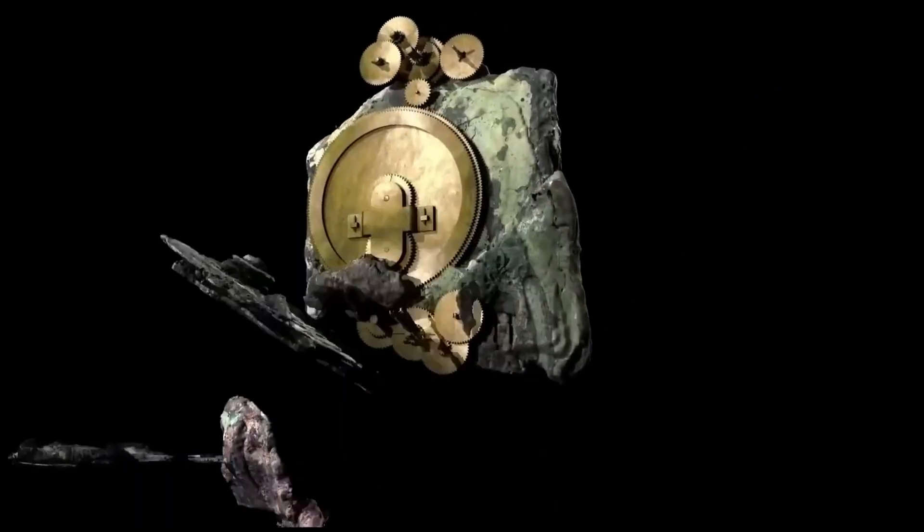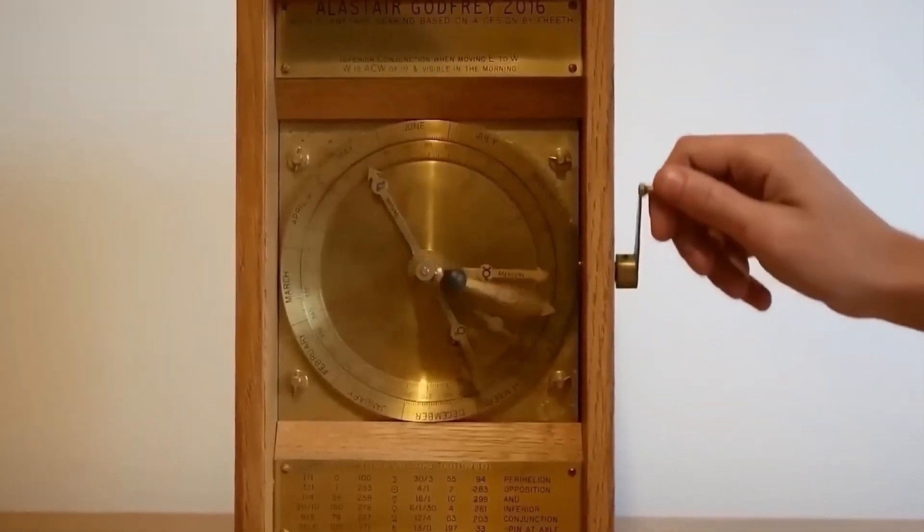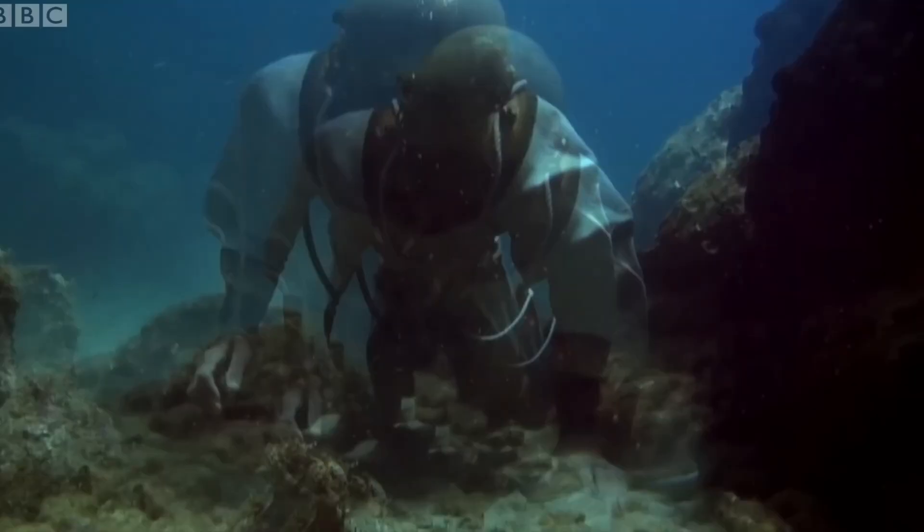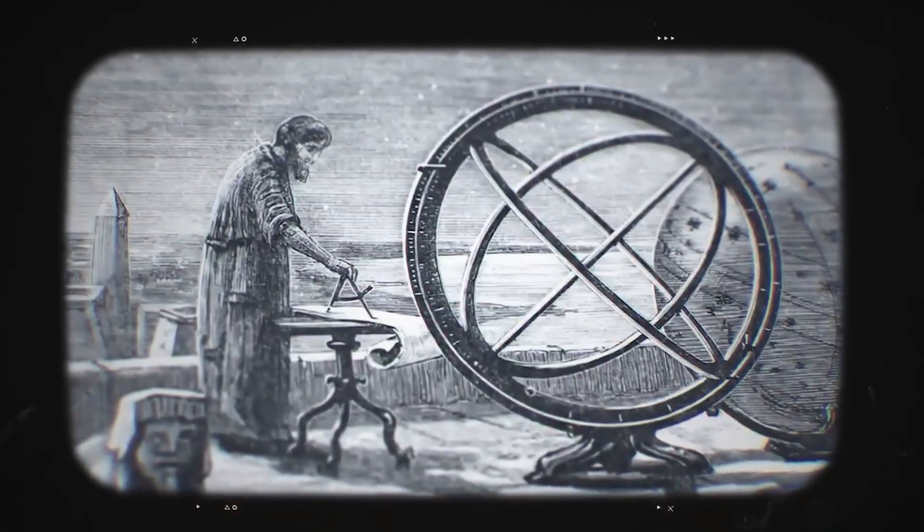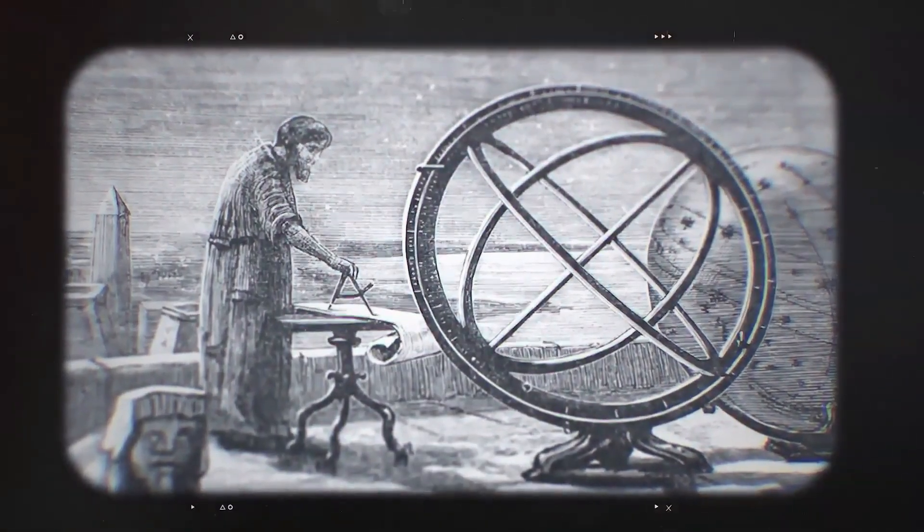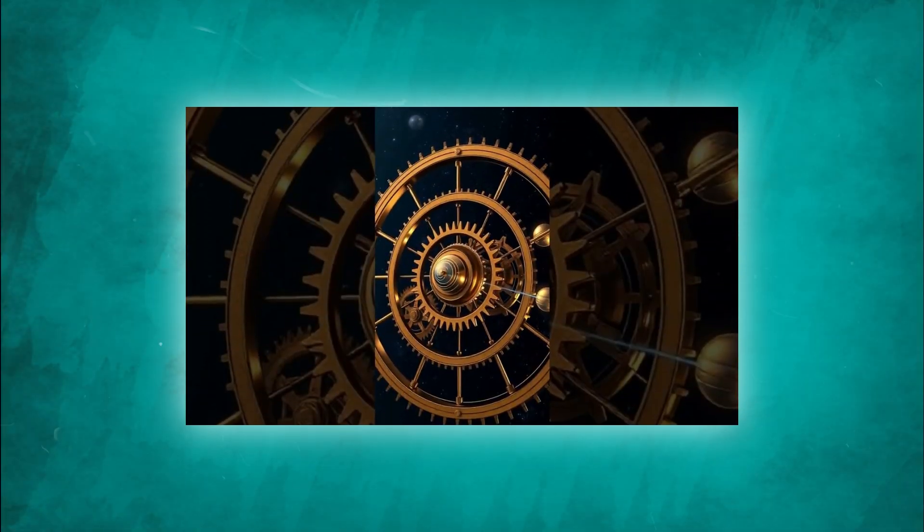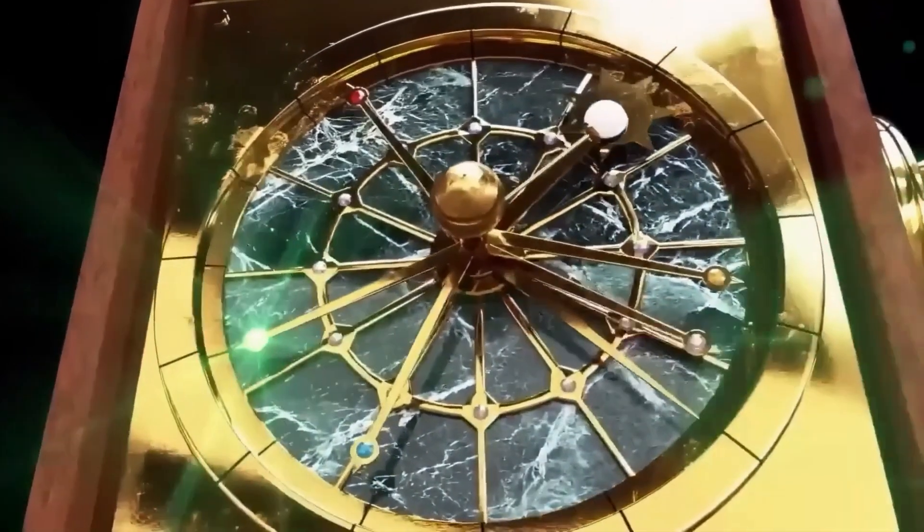The device, later named the Antikythera mechanism, dated to between 150 and 100 BCE. Its complexity baffled scholars. Gears were not thought to exist in antiquity, as mechanical devices like clocks appeared only in the medieval period over a millennium later.